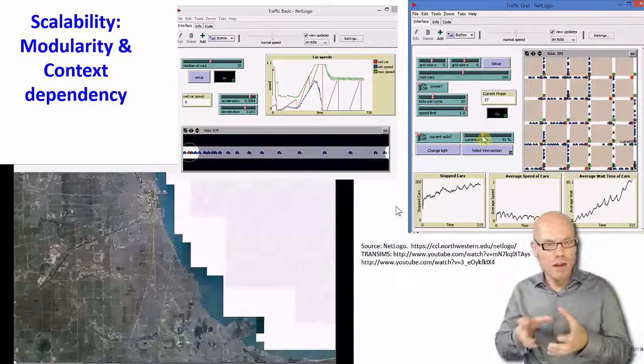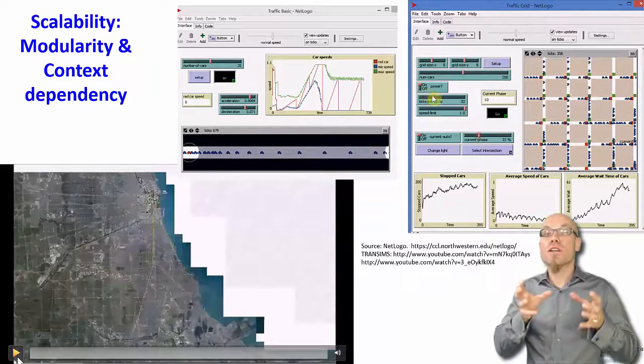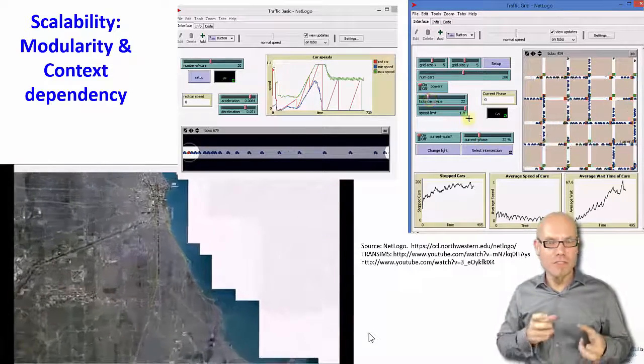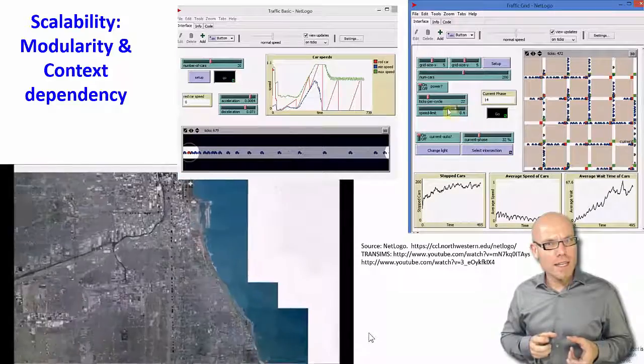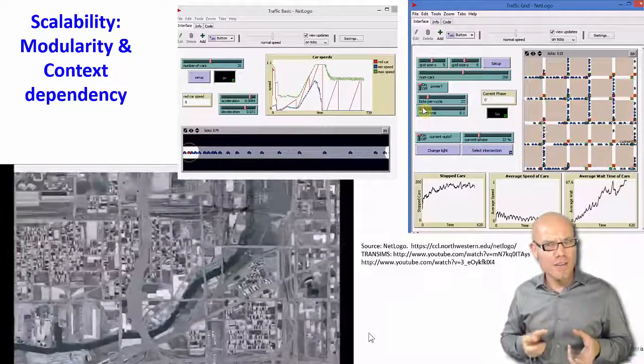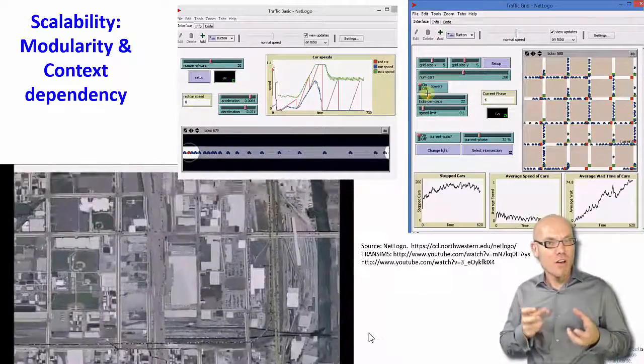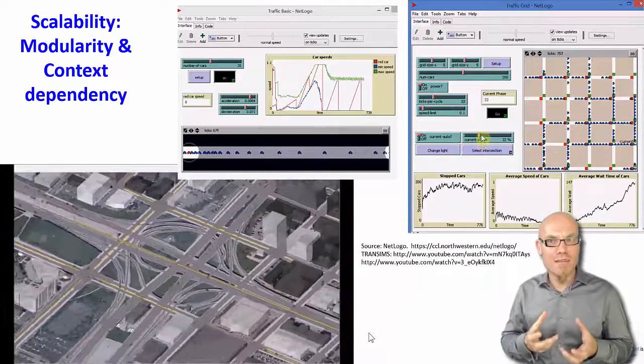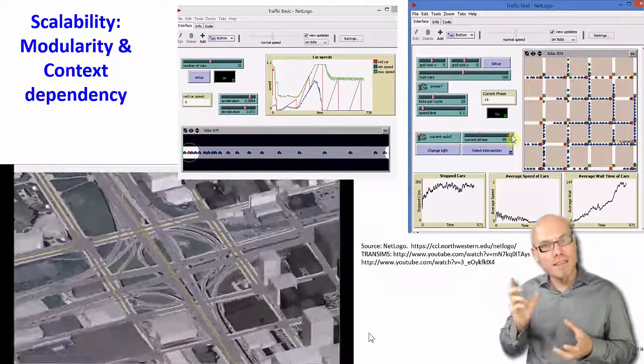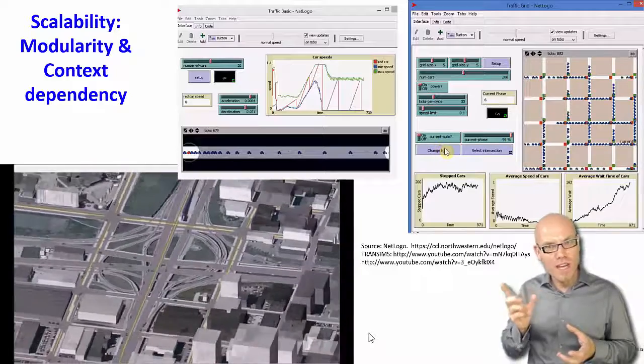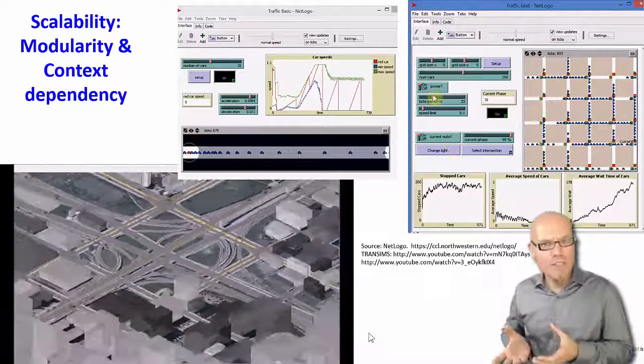Now once you have that, you just copy and paste the code again and you put it in a real-world setting. For example, this here is Chicago, and then you study how in Chicago actually traffic patterns occur, and you can study how that works in this real-world setting. But once you've already developed this code, just a general code, now you can apply it to a different city.